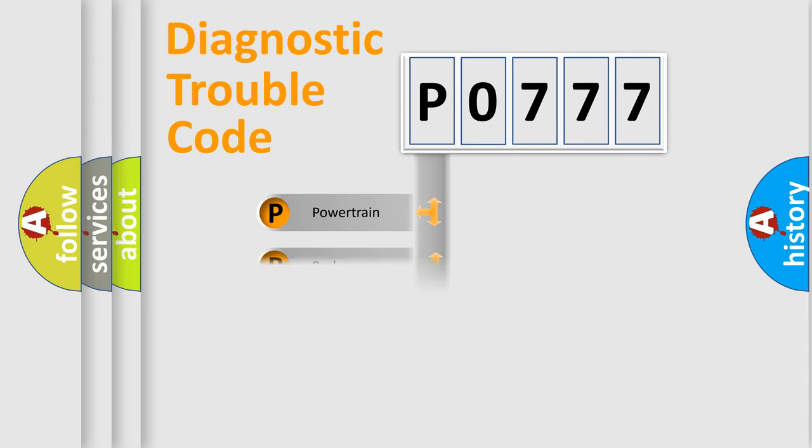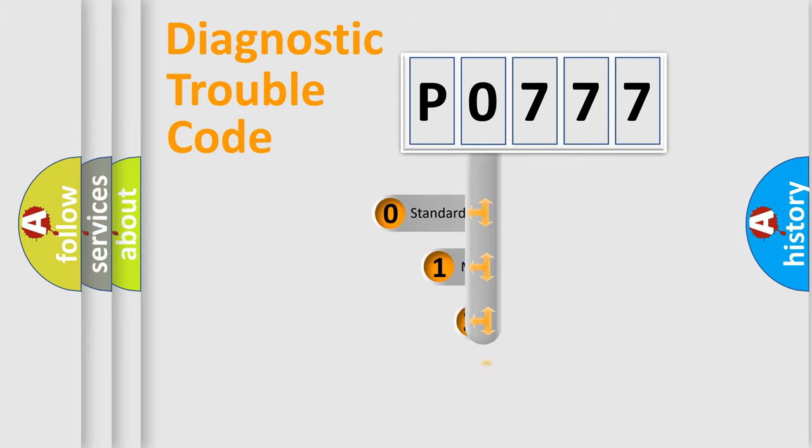Powertrain, Body, Chassis, Network. This distribution is defined in the first character code.